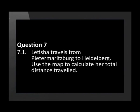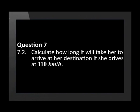The strip map shows the route from Durban to Pretoria. Leticia travels from Pietermaritzburg to Heidelberg. Use the map to calculate her total distance travelled. Calculate how long it will take her to arrive at her destination if she drives at 110 km per hour.